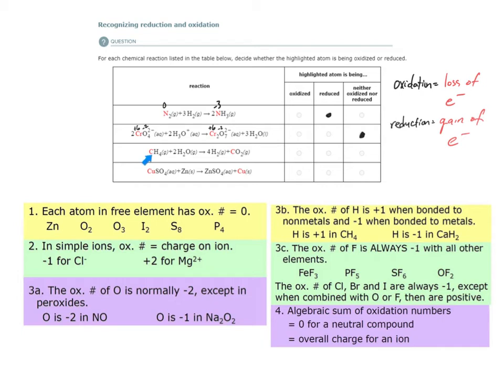Here we have carbon in methane. The oxidation number is negative four. Over here, the oxidation number is negative four again. The oxidation number of each hydrogen atom is plus one and negative two for the oxygen atoms. So carbon is neither oxidized nor reduced.